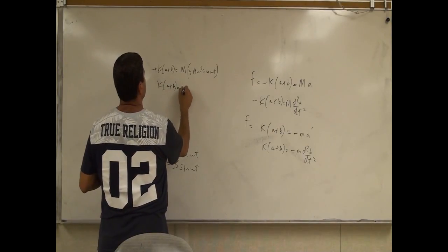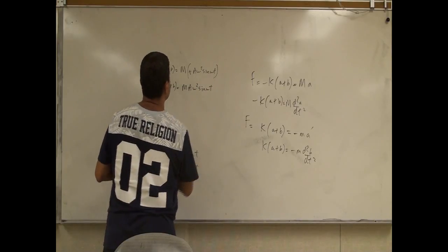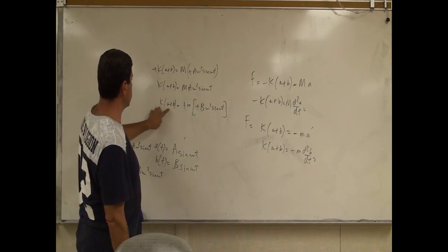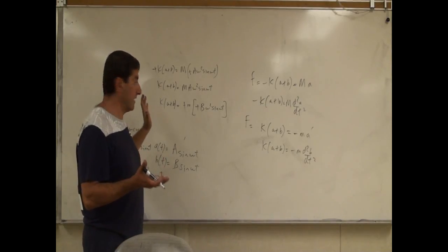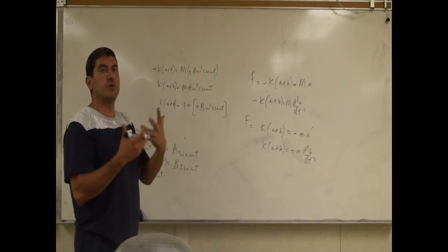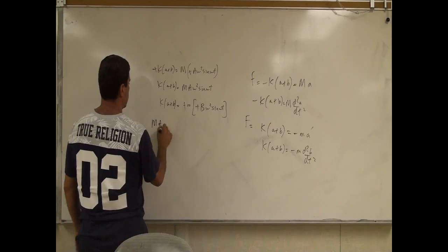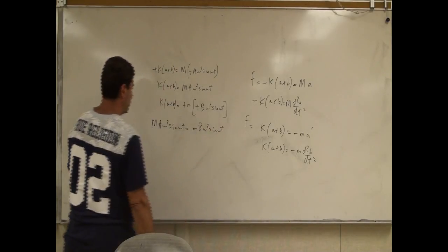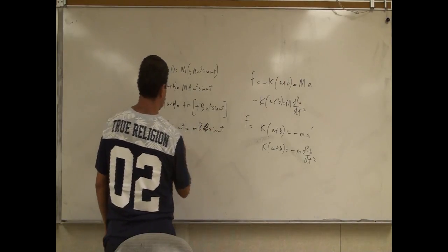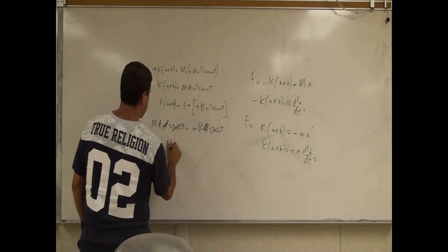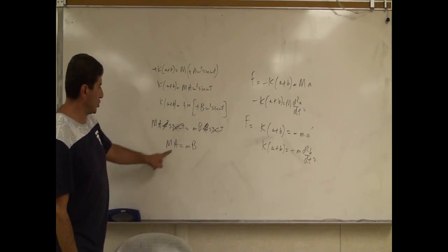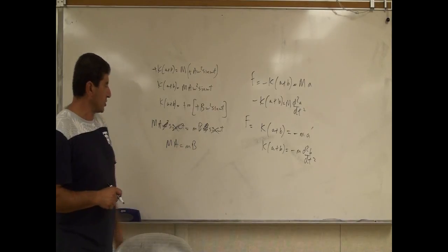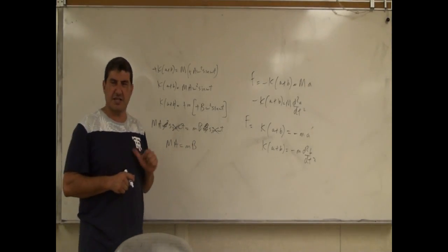Plugging that in, we get K(A plus B) equal to M·A·ω² sine(ωt). We get something similar for the other equation. You can see that K(A plus B) — the force — is the same force on both. So these two equate, and we get big M·A·ω² sine(ωt) is equal to m·B·ω² sine(ωt). The omega squared and the sine terms cancel, giving us big M·A equal to little m·B. This gives us a relationship: the total amplitude of block M is A and this is the little mass — basically this is center of mass conservation, telling us that the center of mass is always conserved.